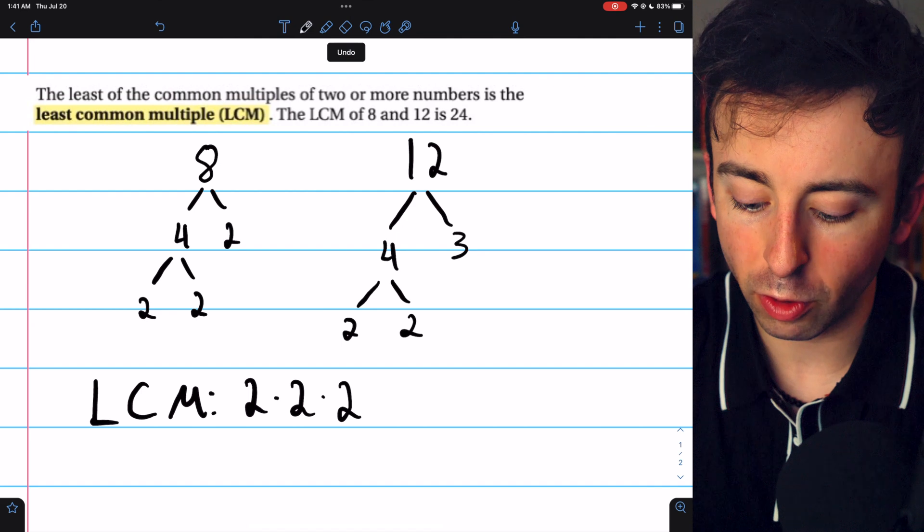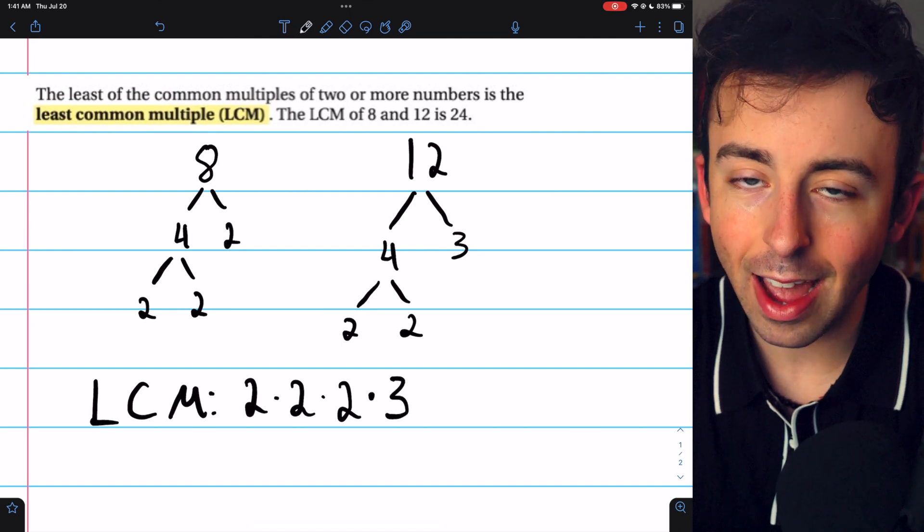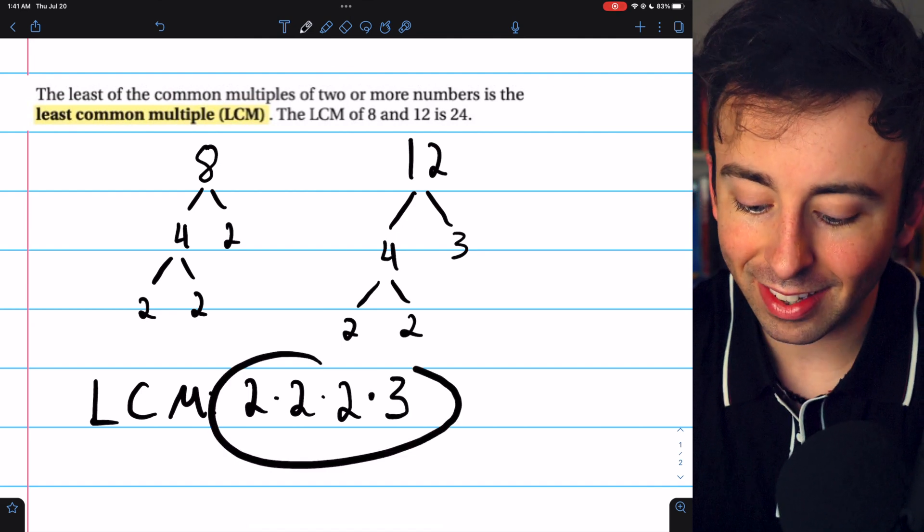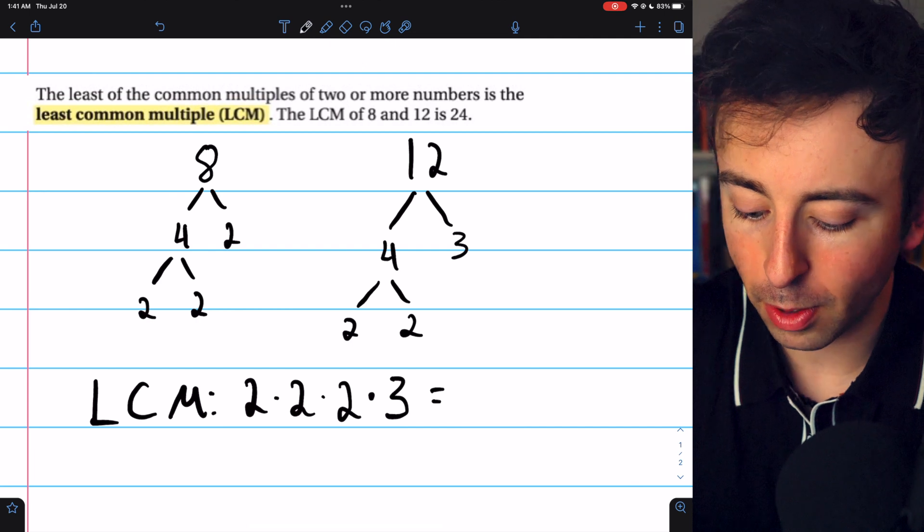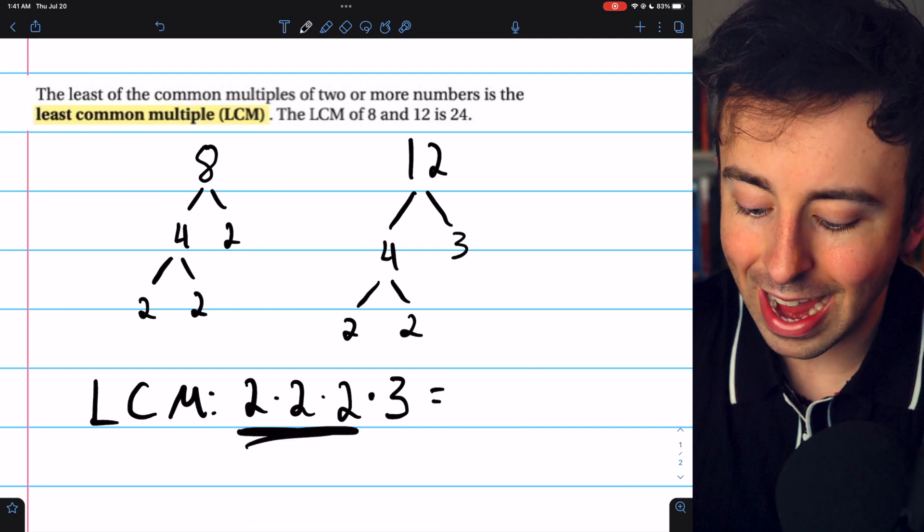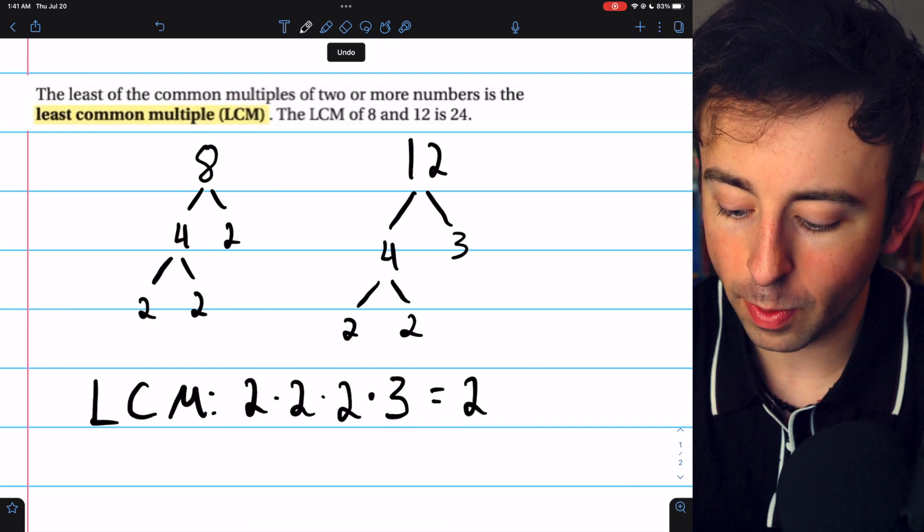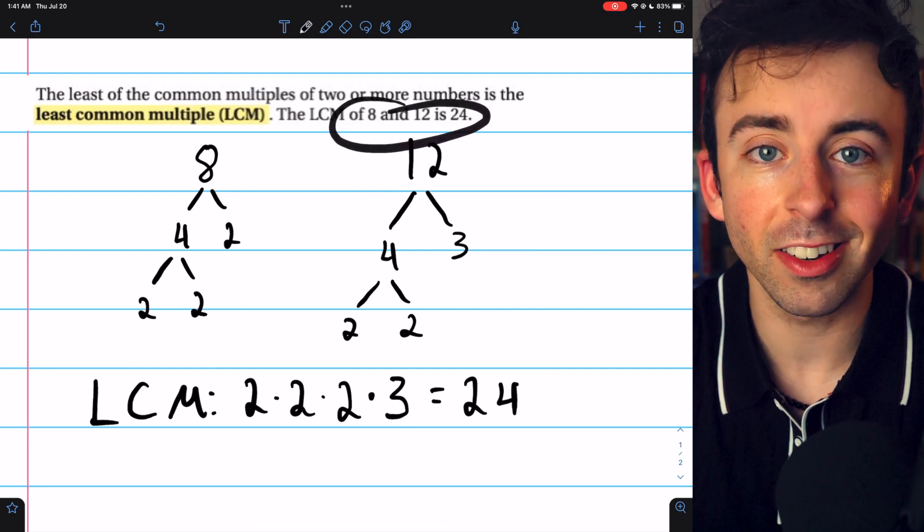However, to cover the factorization of 12, we also need that factor of 3. And this gives us our least common multiple. 2 times 2 times 2 is 8, times 3 is 24. You can see that agrees with the previous strategy.